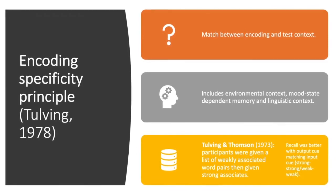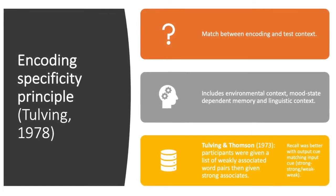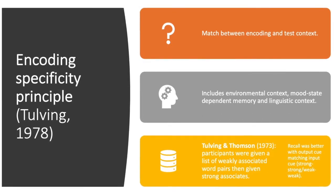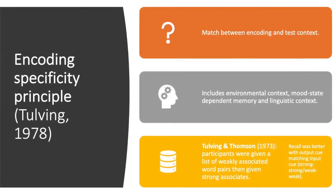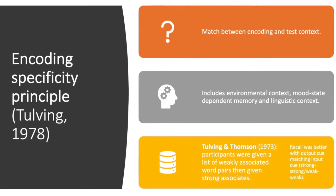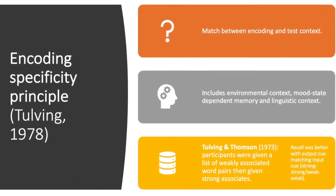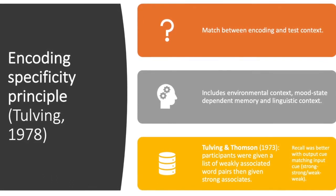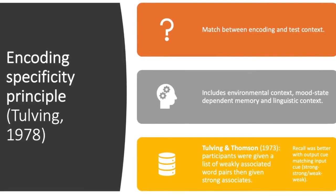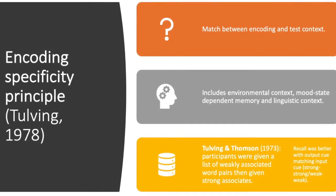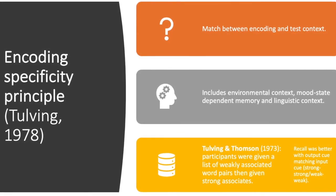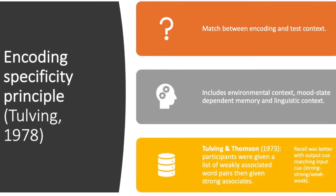For example, Tulving and Thompson in 1973 gave their participants a list of weakly associated word pairs, then were given stronger associates. Recall was better with output cue matching input cue. For example, strong and strong matched, and weak and weak were matched, thus emphasizing the importance of the environmental and linguistic context.